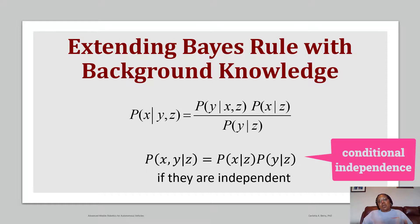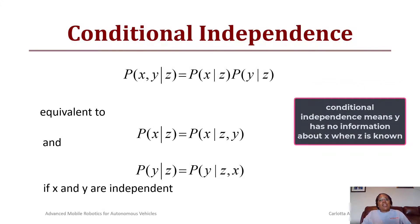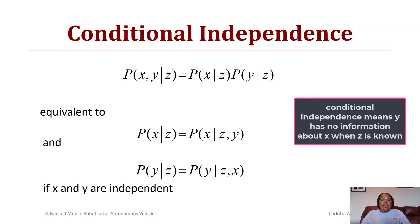From conditional independence, P(X,Y|Z) = P(X|Z)·P(Y|Z) since X and Y are independent. This also means P(X|Z) = P(X|Z,Y), or equivalently P(Y|Z) = P(Y|Z,X) — knowing Y doesn't add information about X beyond what Z already provides, and vice versa.